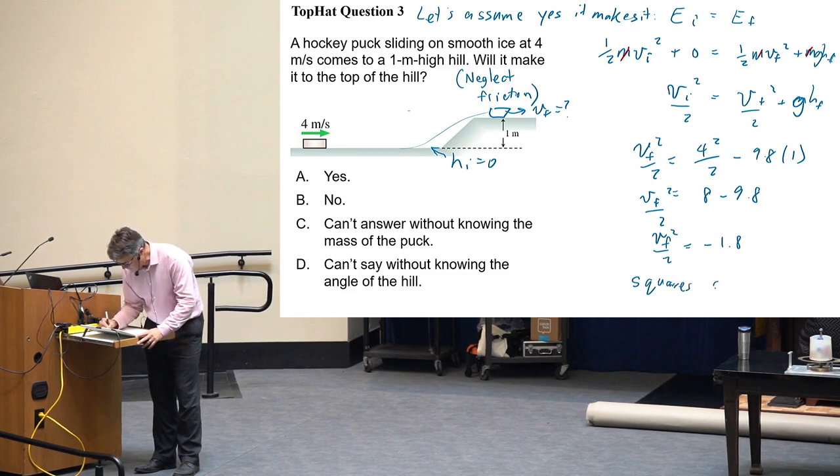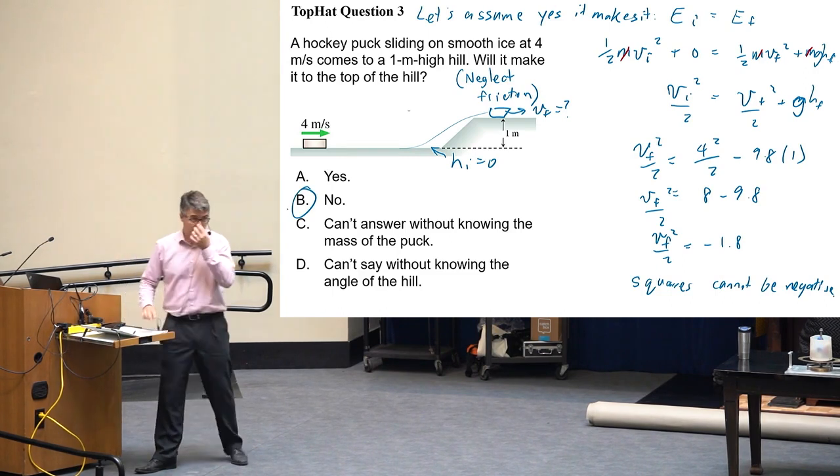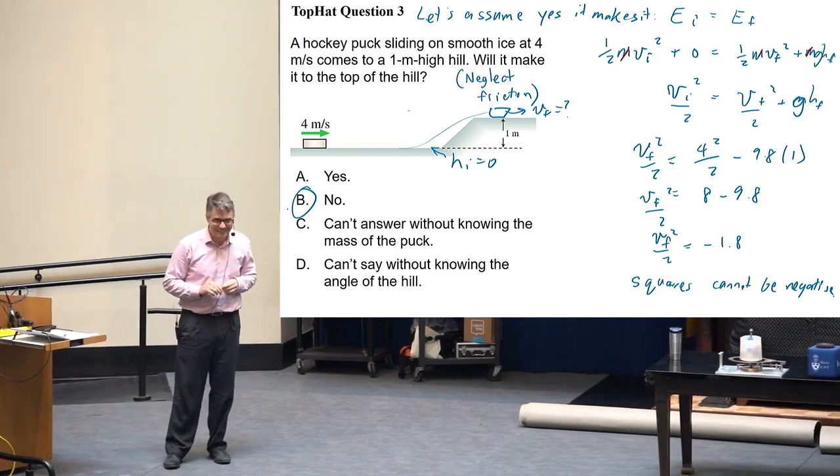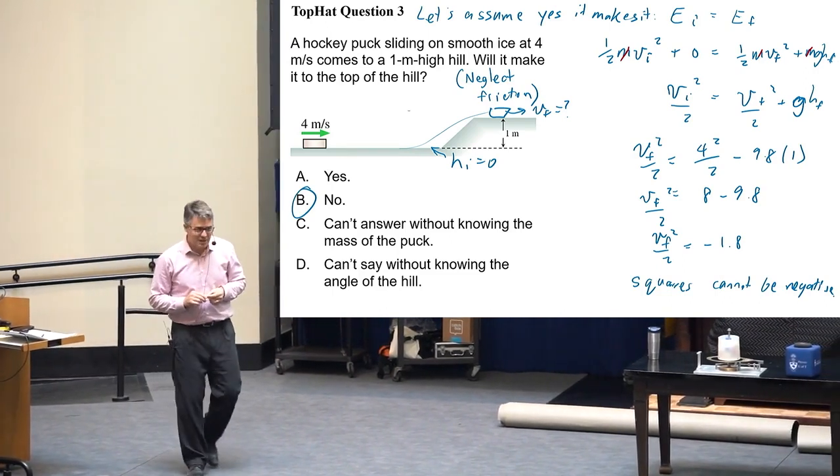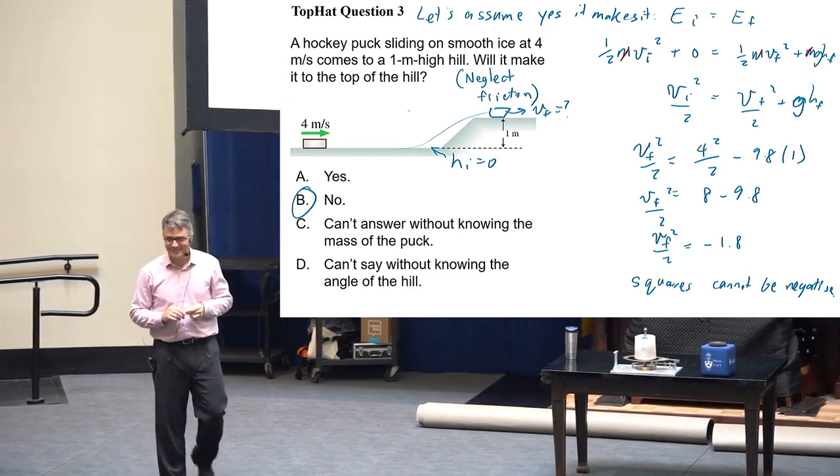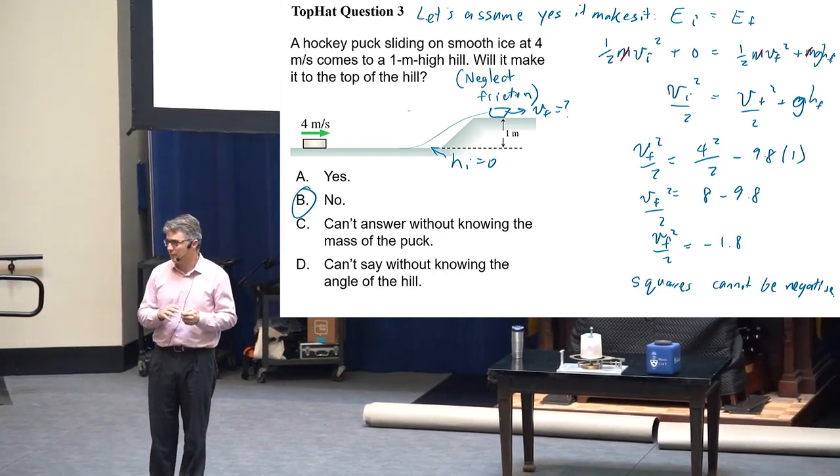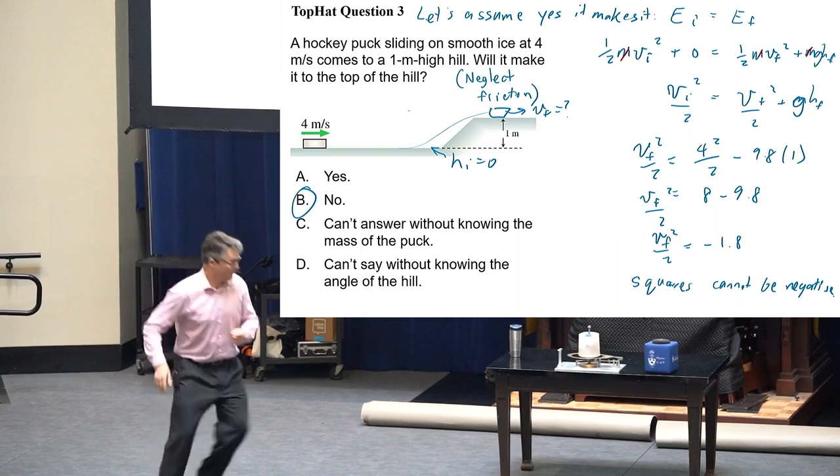Let's say that V initial squared over 2 is equal to V final squared over 2 plus g times H final. V final squared over 2 is equal to V initial squared over 2, so that's like 4 squared over 2 minus 9.8 times 1. And I ended up with 8 minus 9.8 is V final squared over 2. So I get V final squared over 2 is equal to negative 1.8, and squares can't be negative. You get an imaginary... I mean there's a lot of ways of thinking of this, but does that sort of make sense? If you get an imaginary final speed, then it means it's not going to happen in physics.